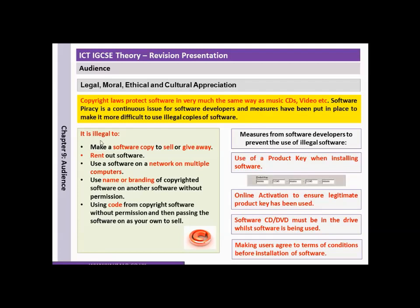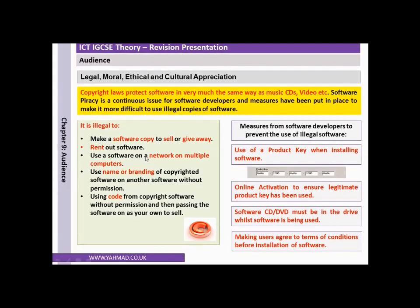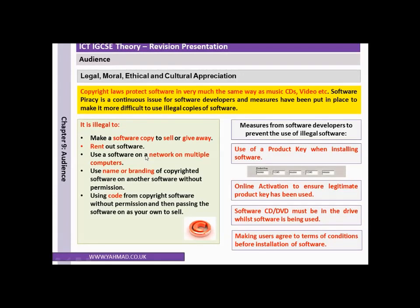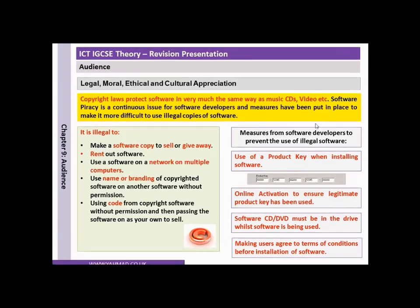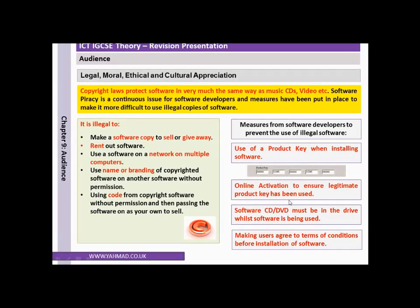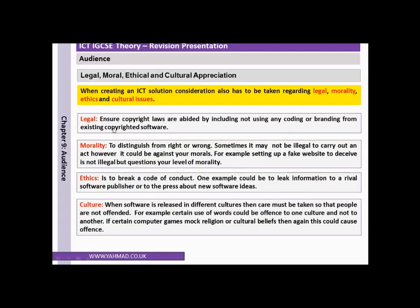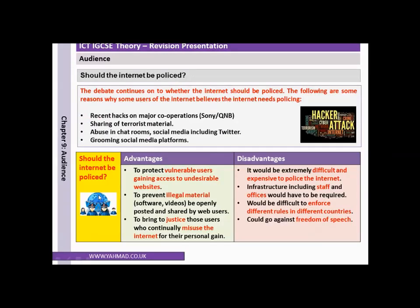Make sure you understand copyright law and what is illegal — making copies and selling them, using one software licence on multiple networks, and using the branding and coding of software to create your own. You also need to know what measures can be taken to prevent the use of illegal software. It's really important to know the difference between legal, morality, ethics and culture. Finally, you need to be aware of why the internet needs to be policed, and both the advantages and disadvantages of policing the internet.